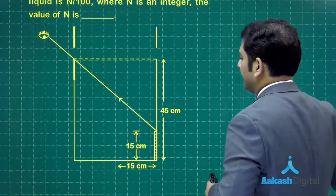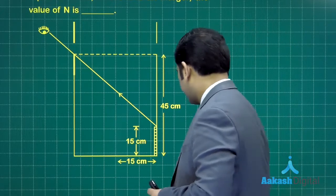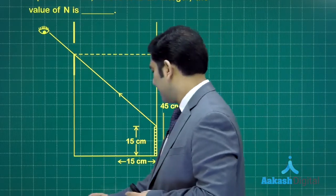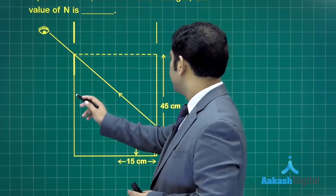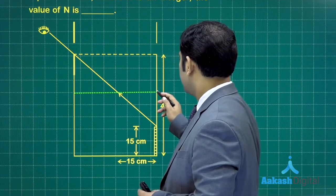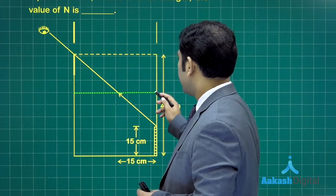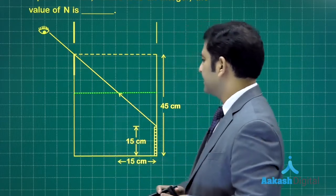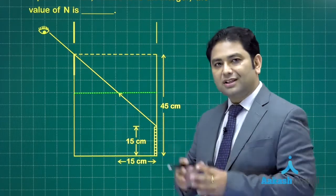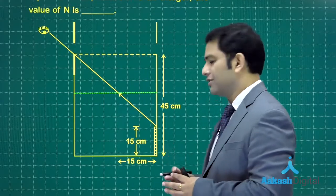When a liquid is filled up to a height of 30 centimeters, if I have to show it, something like this here is the given condition. Liquid has been filled up to a height of 30 centimeters. Now the observer can see this particular edge.